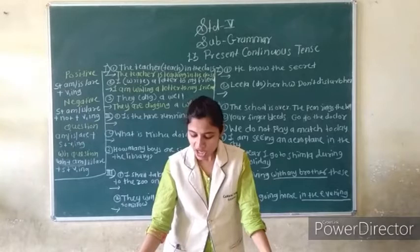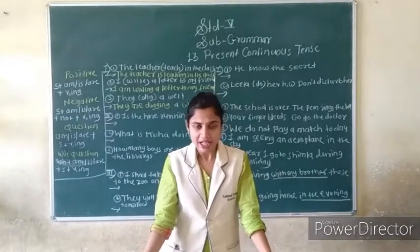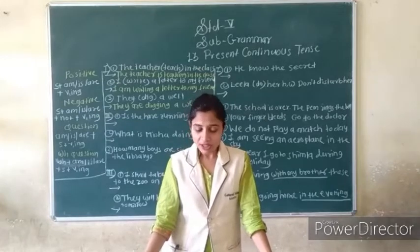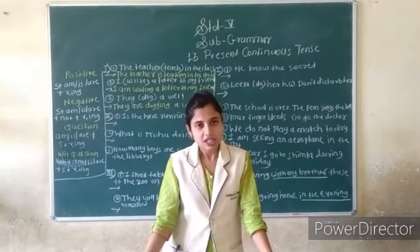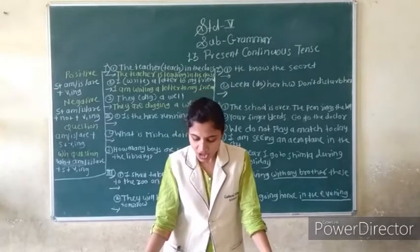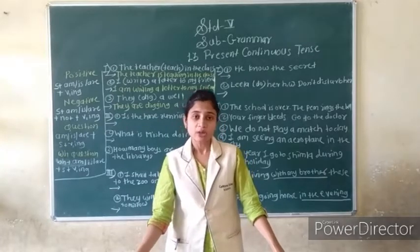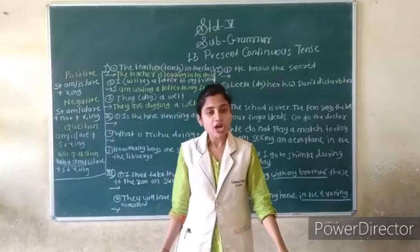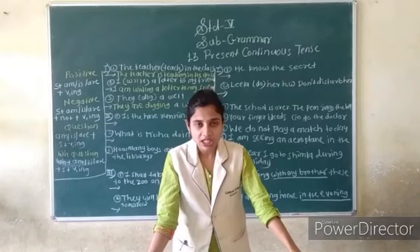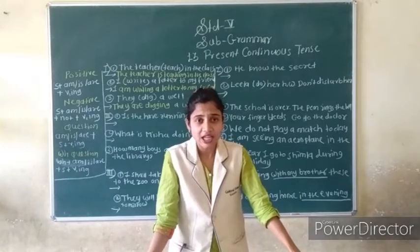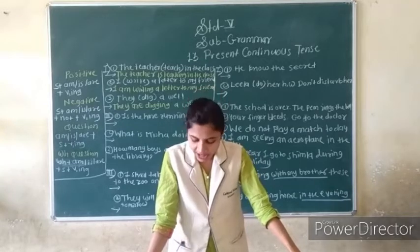Next: The sun shines in the sky. 'Shine' is in the bracket. Answer: The sun is shining in the sky. Fifth one: Boys swim in the river. 'Swim' is in the bracket. Boys is plural, so you use 'are'. Boys are swimming in the river. Like this you can solve it.